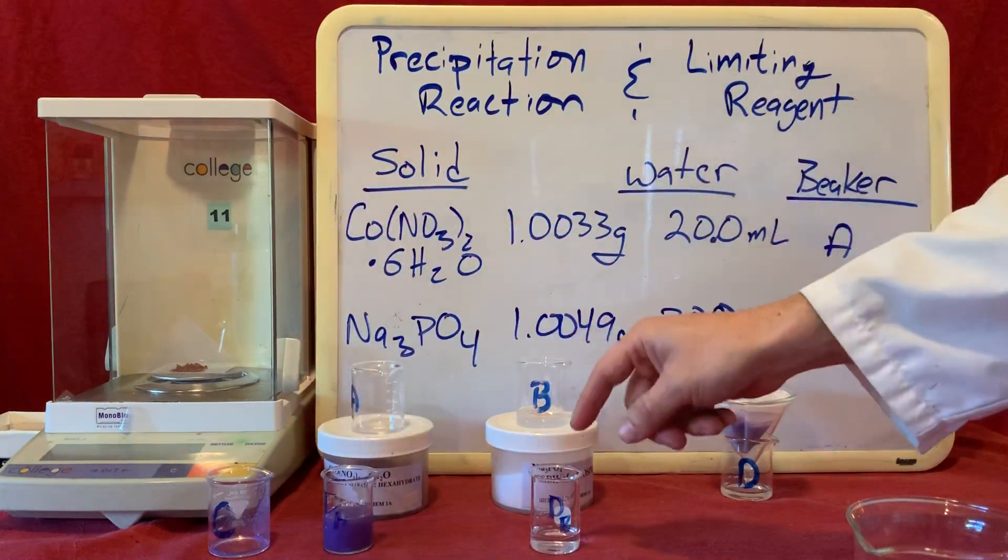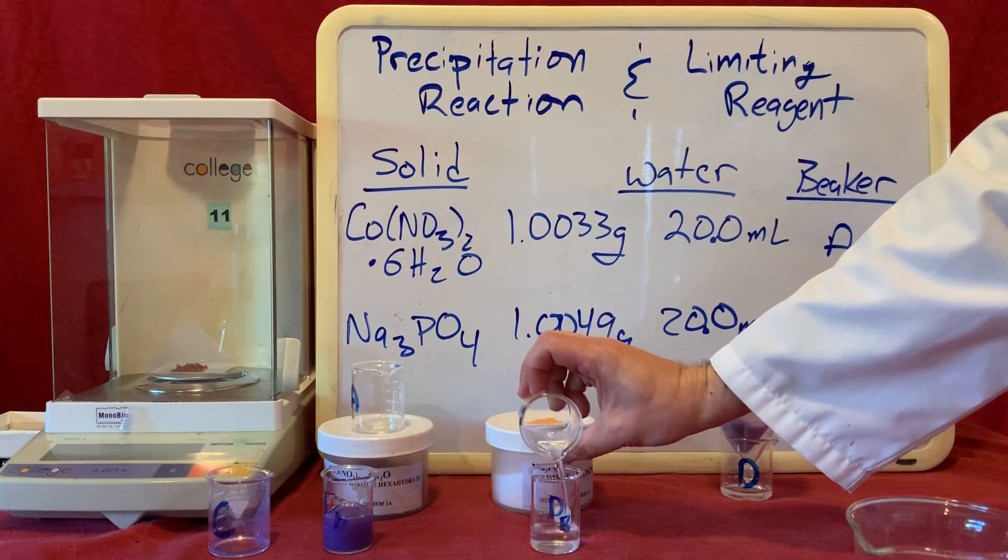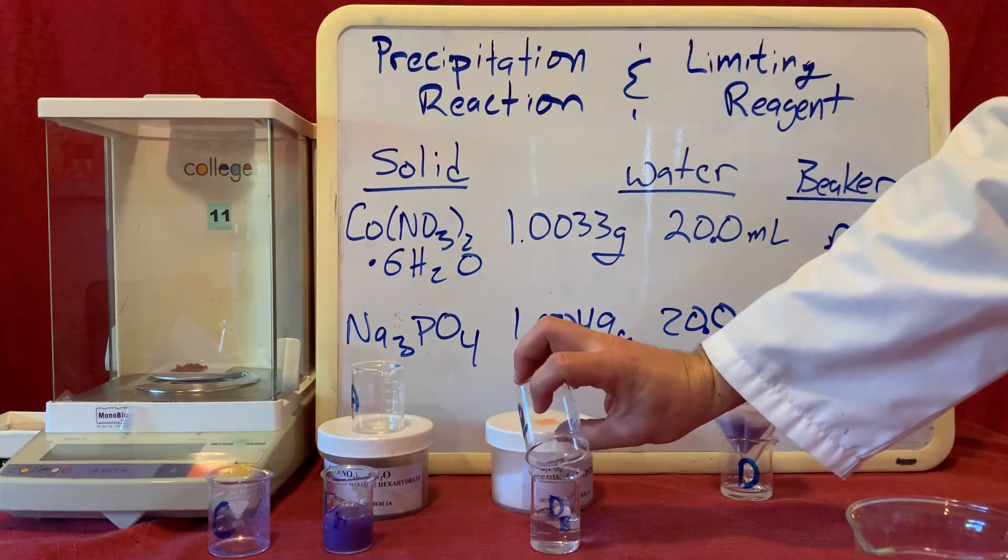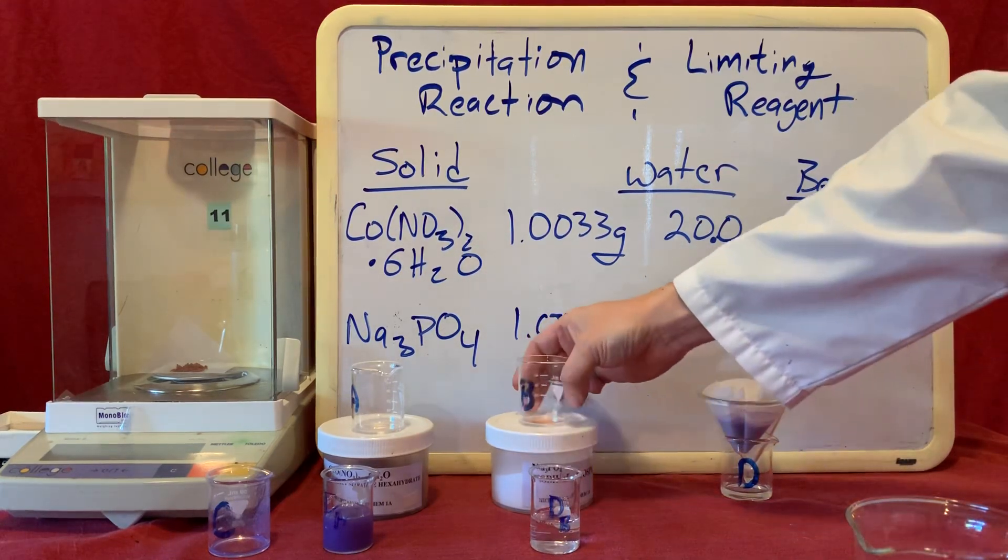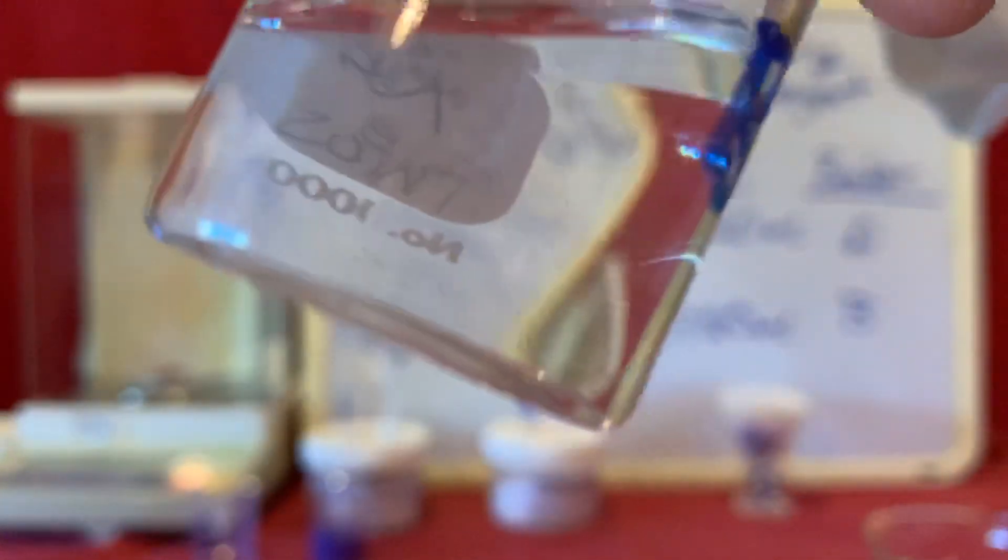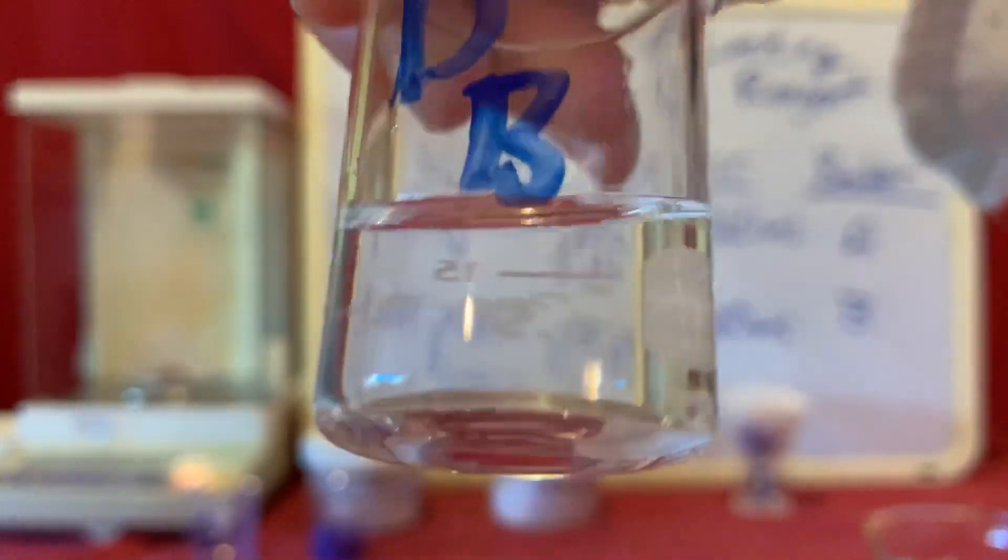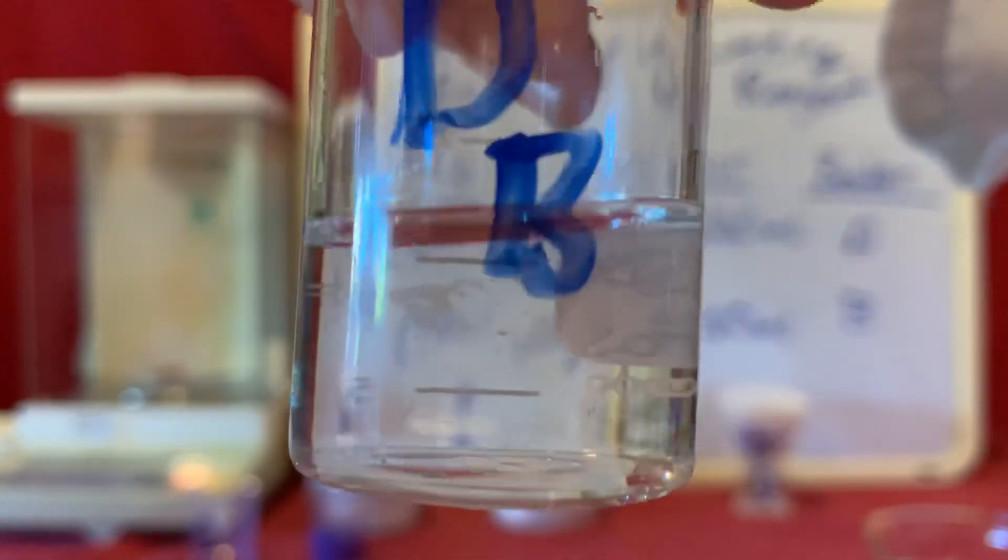Now to D sub B, let's add the remainder of our B solution. And here's what that looks like. D sub B, you can see our solution sitting down here in the bottom.